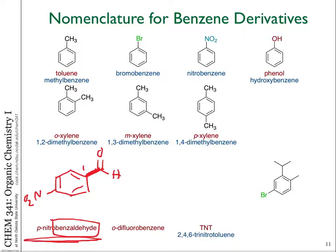Orthodifluorobenzene: benzene has two fluorine groups and ortho means they're in the 1 and 2 positions — adjacent on the ring.